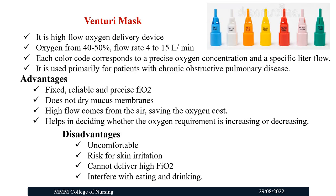The Venturi Mask is a high flow oxygen delivery device. Oxygen concentration is about 40–50% at a flow rate of 4–15 litres per minute. Each color code represents a precise oxygen concentration and a specific liter flow. It is used for patients with Chronic Obstructive Pulmonary Disease. Advantages: provides fixed, reliable, and precise FiO2; does not dry the mucous membrane; and high flow from air saves oxygen cost. Disadvantages: uncomfortable, risk of skin irritation, cannot deliver high FiO2, and interferes with eating and drinking.